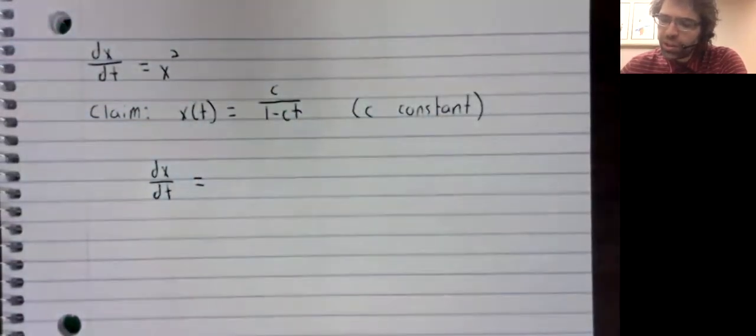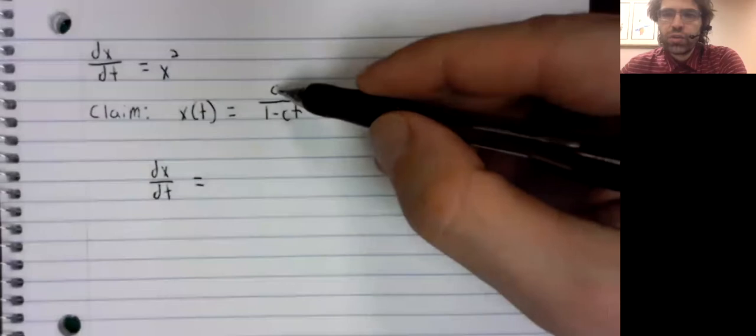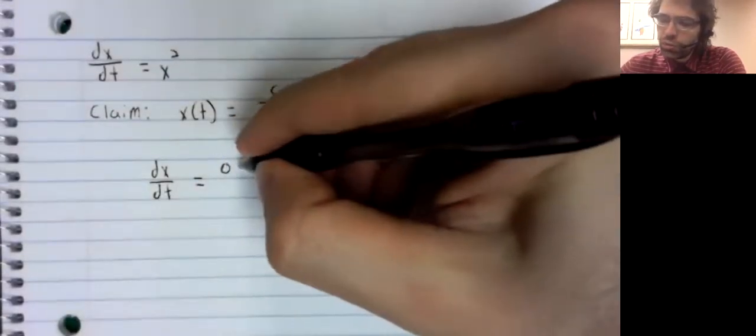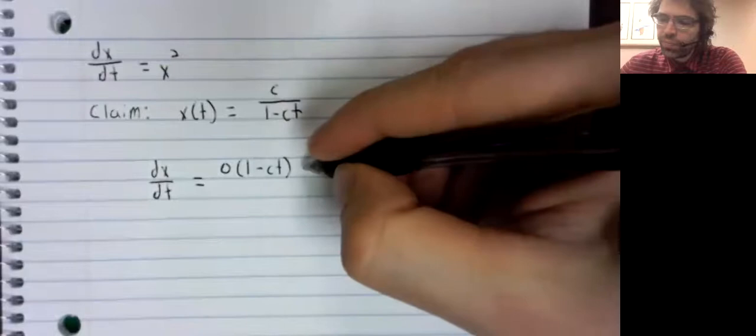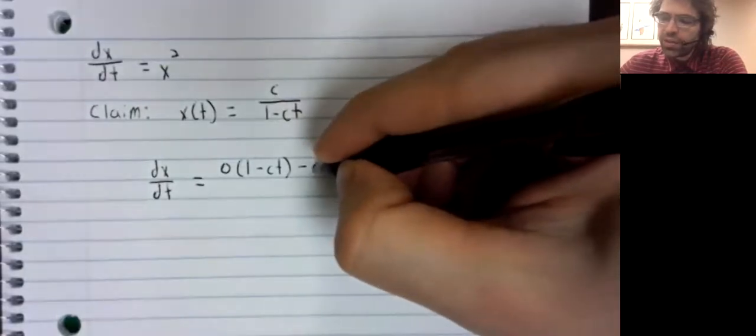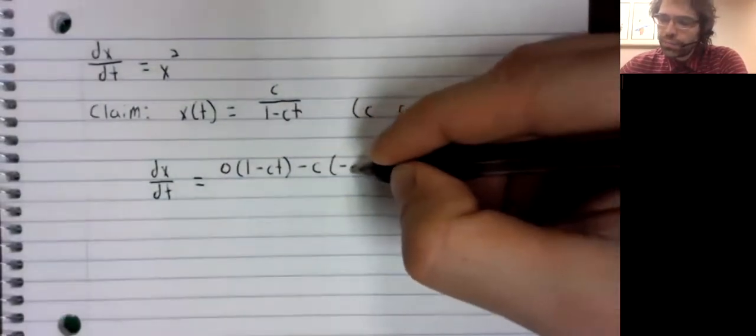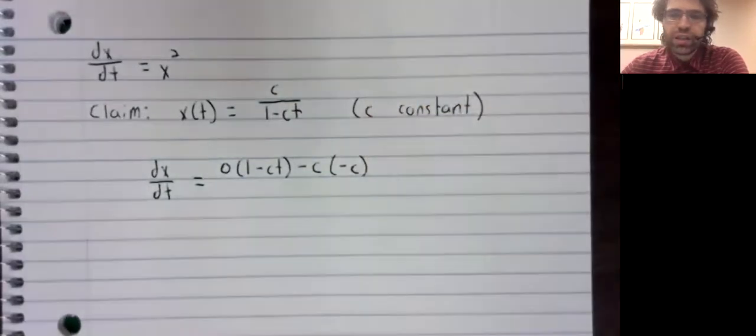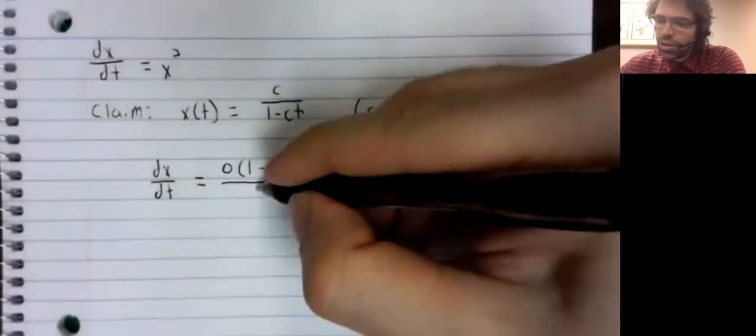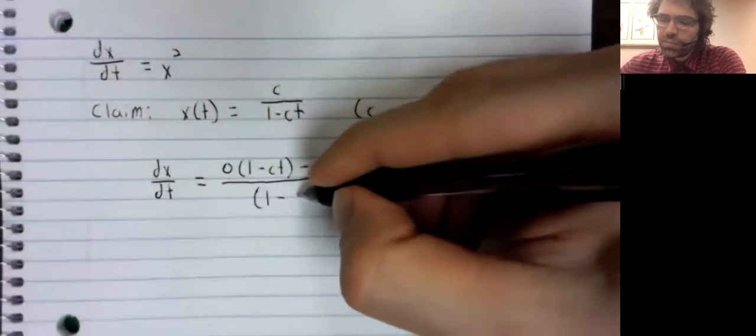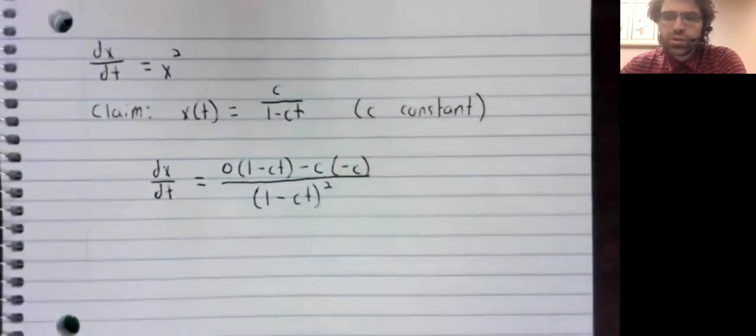Okay, so we can use the quotient rule here. The derivative of the numerator is zero, times the denominator, minus—and this time we'll leave the numerator alone and take the derivative of the denominator—all divided by the denominator squared.